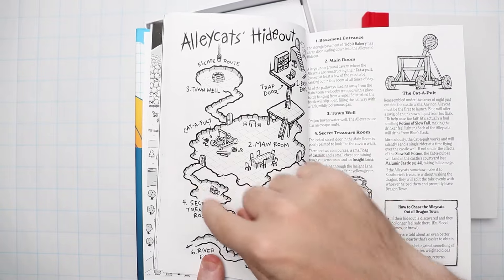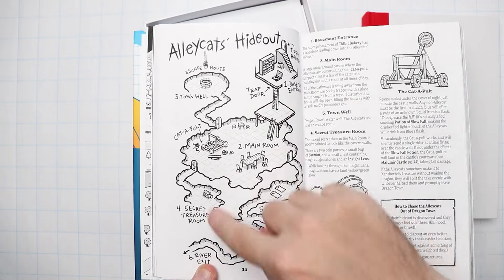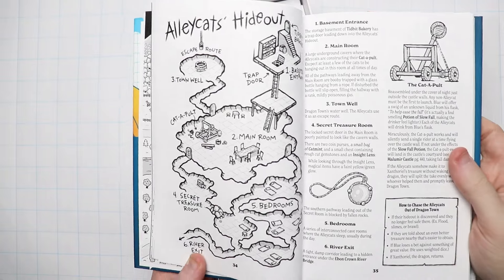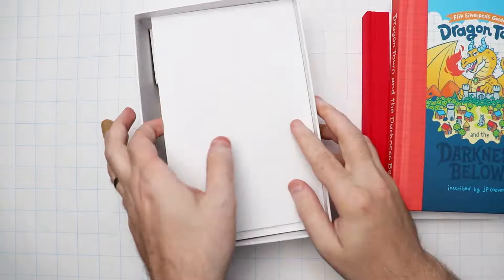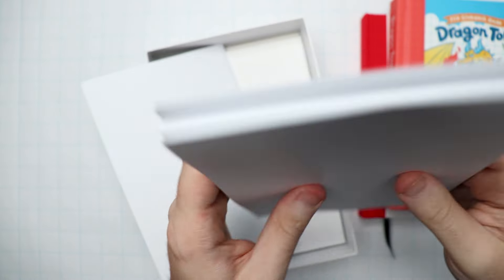This is missing all of the labels of the hideout. So you can just throw the map down and let them explore as they will. There's going to be 10 maps front and back. So a big stack of these maps.